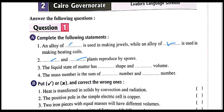The mass number is the sum of protons and neutrons — true. Heat is transferred in solids by conduction and radiation — false, it is by conduction only. The positive pole in a simple electric cell is copper — true. Two iron pieces with equal mass will have different volumes — false.